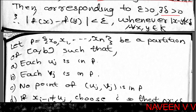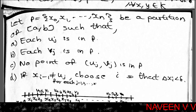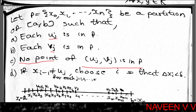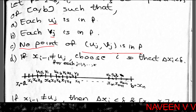Choose a partition P of [a, b] satisfying four conditions: first, each u_j is in P; second, each v_j is in P; third, no point of open interval (u_j, v_j) is in P — so no interior point of those intervals appears as a partition point; fourth, if x_{i-1} is not equal to u_j for each j = 1, 2, 3, ..., k, then delta x_i is less than delta.